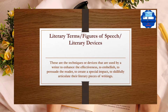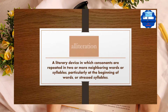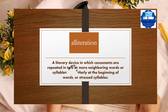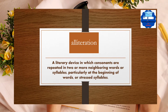The first figure of speech we are going to discuss is alliteration. Alliteration is a literary device in which consonants are repeated in two or more neighboring words or syllables, particularly at the beginning of the words or stressed syllables. It is a very old device in English verse and occasionally used in prose. It is used to achieve a special effect and emphasis in verse and prose.